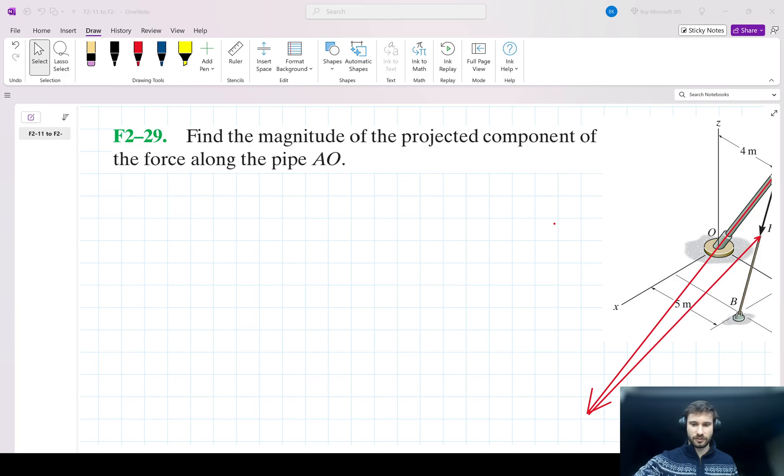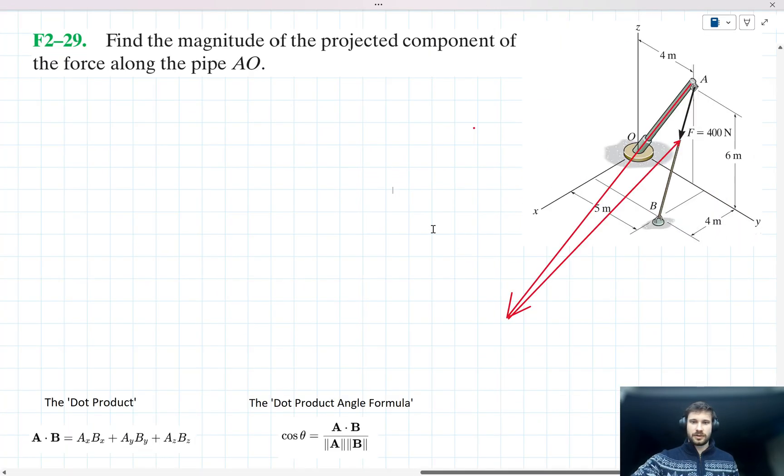So let's just move back over to OneNote here. Let's go ahead and solve this. Might make sense first of all to solve for the angle between AO and force F. Let's call this angle theta here. In order to do that, we can make use of these ideas that I've shown in the bottom left here of the dot product and the dot product angle formula.